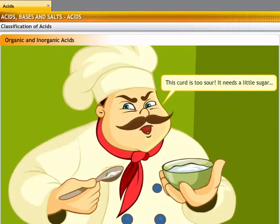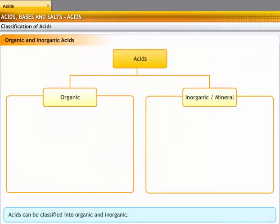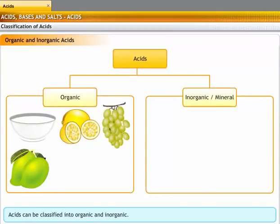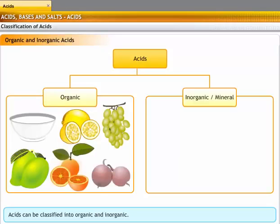This curd is too sour. It needs a little sugar. Curd contains lactic acid, which gives it a sour taste. Acids obtained from food like curd, lemons, grapes, raw mango, citrus fruits, and gooseberry are called organic acids.